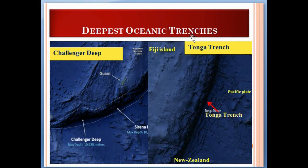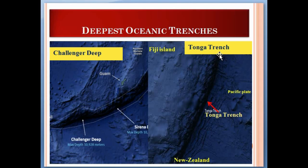The deepest oceanic trenches: Challenger Deep is the deepest trench in the world at 10,928 meters, or 10.9 kilometers deep. The Tonga Trench is the second deepest ocean trench in the world. It is located here — near the Fiji Islands, the Pacific Plate, and New Zealand.